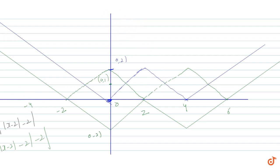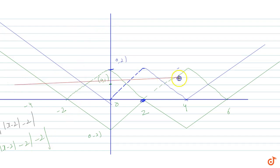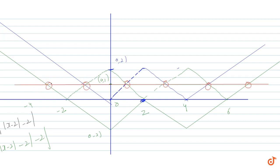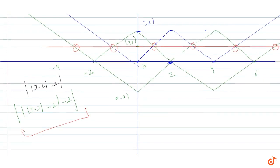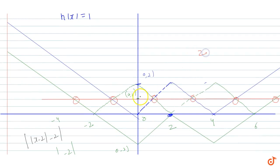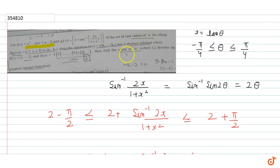Drawing the line h(x) = 1 on the third curve (green), we count intersections: 1st cut, 2nd cut, 3rd cut, 4th cut, 5th cut, and 6th cut — giving exactly 6 solutions. To summarize: with 1 modulus we get 2 solutions; with 2 moduli (blue curve) we get 4 solutions; with 3 moduli (green curve) we get 6 solutions. Therefore, the answer is n = 3.